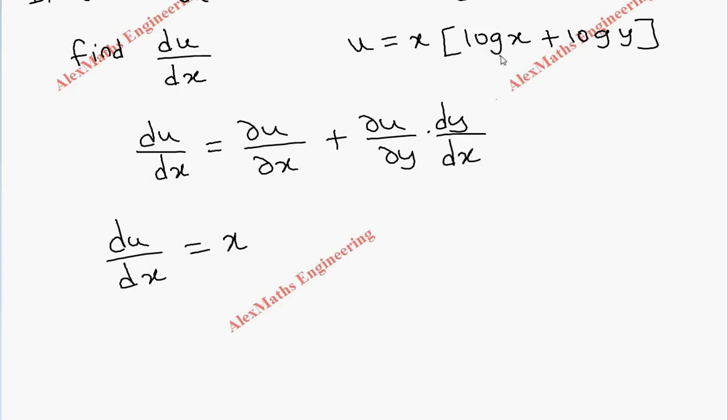So x into derivative of log x is 1 by x and log y is constant. So it is 0 plus, we have to write this log x plus log y as it is into partial u by partial y.